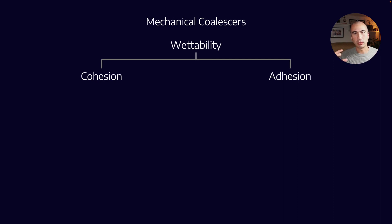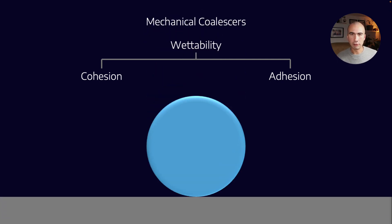The way that water droplets form on surfaces is related to two different competing forces. Let's consider a water droplet on a surface. We can talk about the forces of cohesion, which is the internal forces within the droplet.